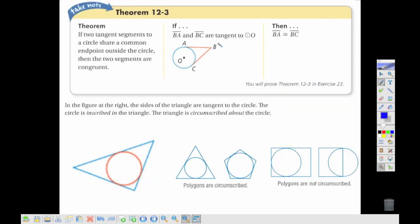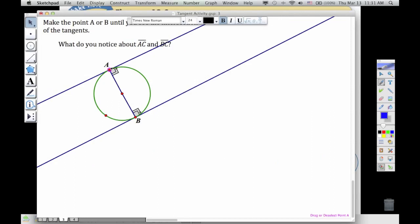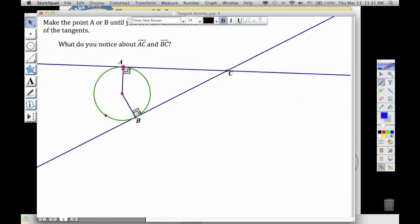Okay, the next theorem looks at if we have two tangents coming together and meeting at a point, then those two tangents should be congruent to each other. So I can see that in this one, I've got a couple tangent lines. And if I bring this down, notice that distance from A to C and the distance from B to C are the same, no matter where I go. It could be on either side of that circle.